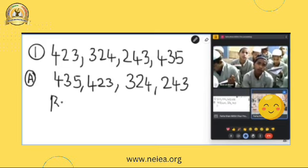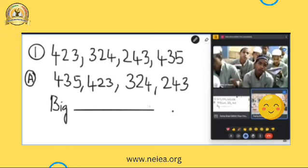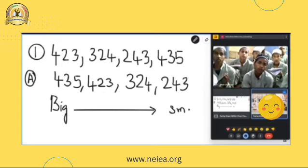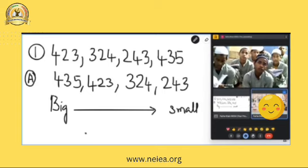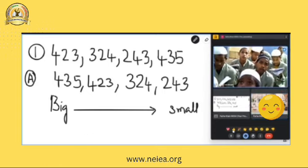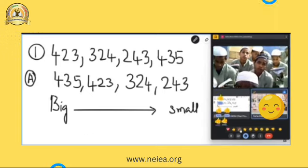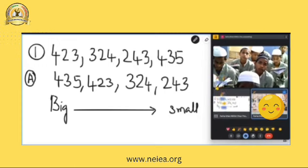We have bigger number, smaller number. Okay, what order? Descending order. Shambash, descending order. Shabash, very good. Mashallah, very good.